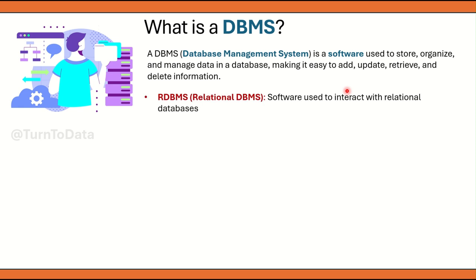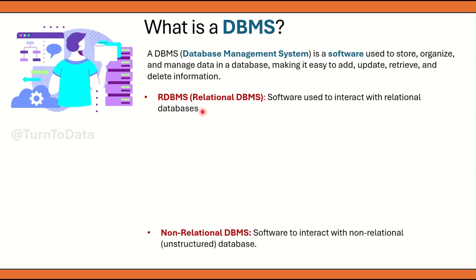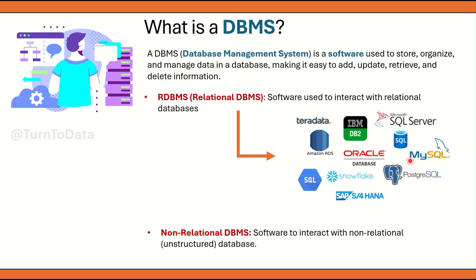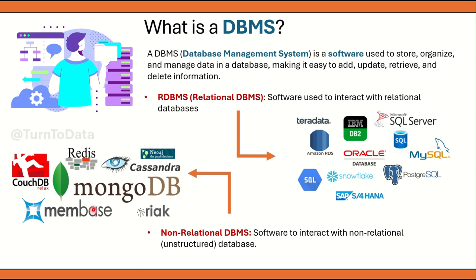There are two major types of DBMS. The first major type is RDBMS, which is known as relational DBMS — a software used to interact with relational databases. The next type is non-relational DBMS, which is software to interact with unstructured or non-relational databases. Examples of relational DBMS include MySQL, PostgreSQL, Microsoft SQL Server, and Oracle Database. Examples of non-relational DBMS include MongoDB, Membase, Redis, CouchDB, and Cassandra — all of which work with unstructured databases.